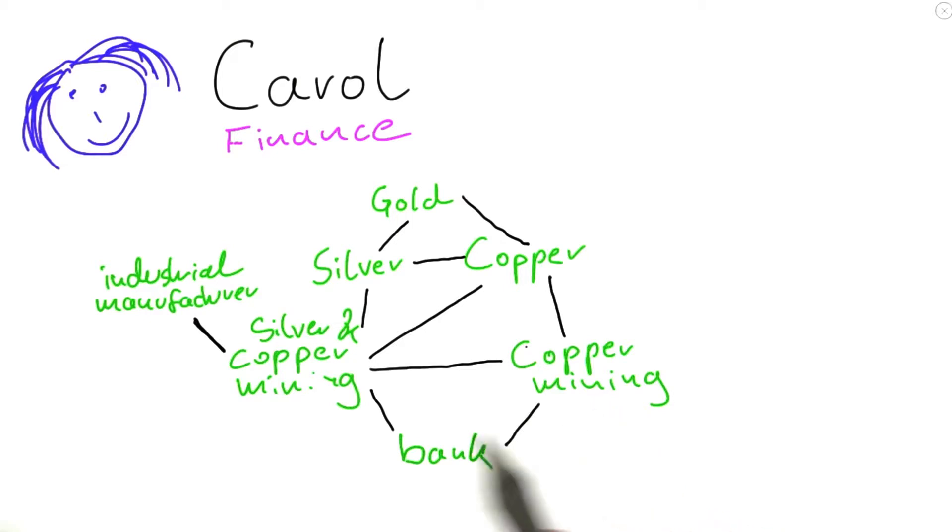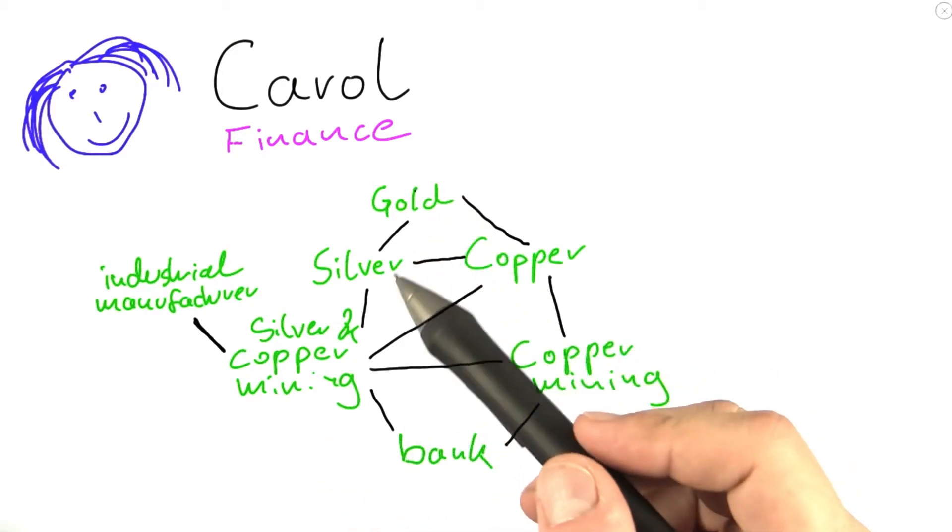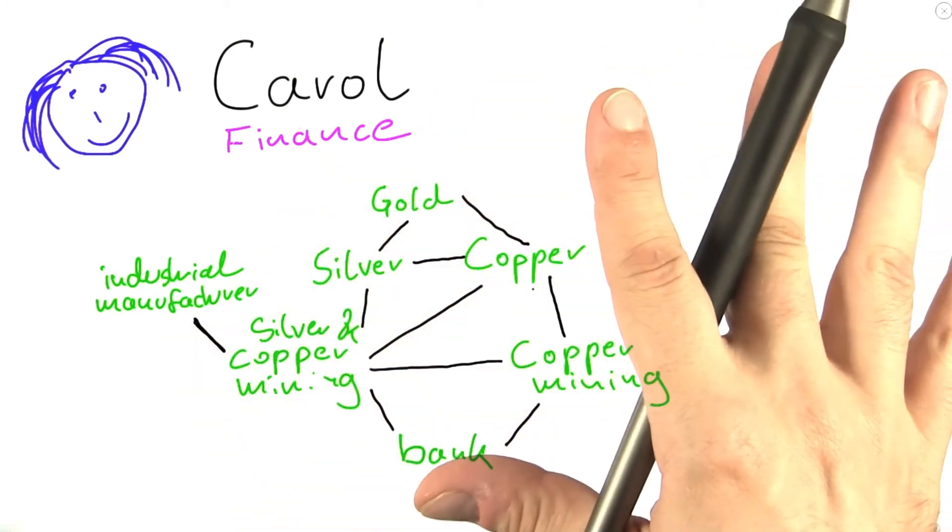So in order to spread the risk as much as possible, Carol, of course, wants to find a portfolio that contains as many different items as possible, because then she has spread out her risk.